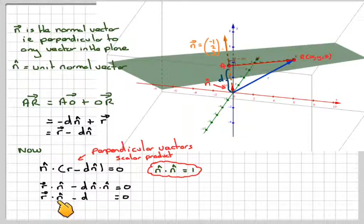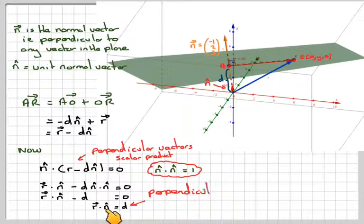So, this comes down to R dot the unit vector minus D is equal to 0, which is R dot the unit vector is equal to D. So, this is the perpendicular distance from the origin.